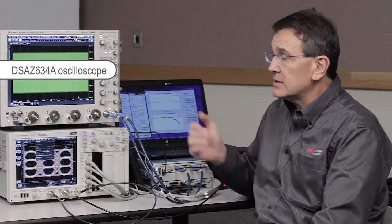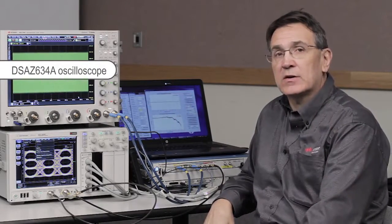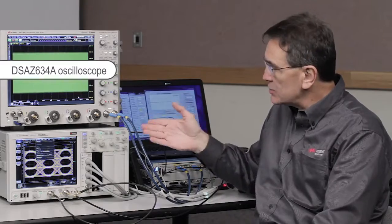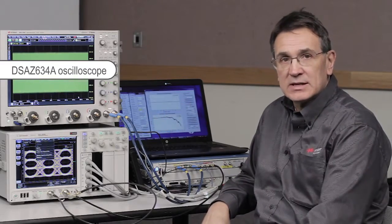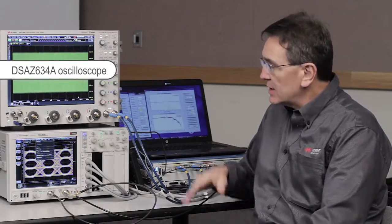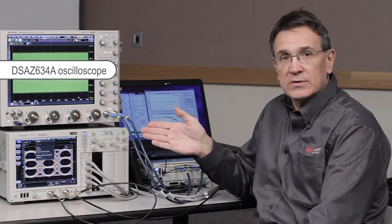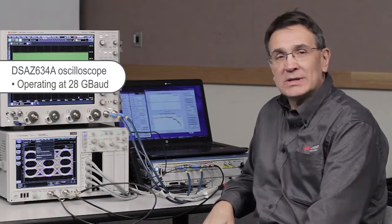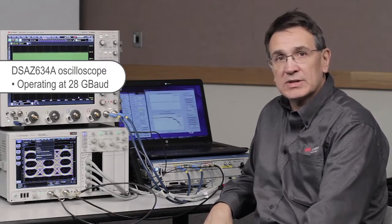We have a Keysight Z-Series 63 GHz oscilloscope, and we're using our real-edge channels that have full bandwidth out to 63 GHz to receive a signal, a PAM-4 signal, that's operating at 28 Gbaud, or 28 Giga symbols per second.